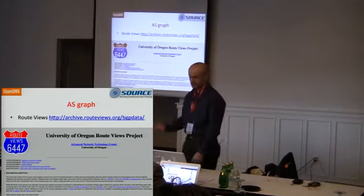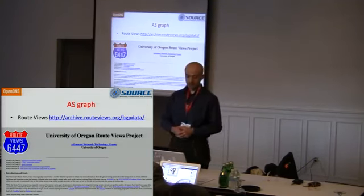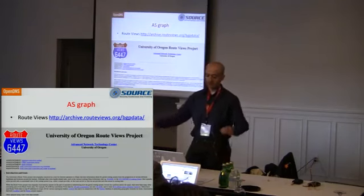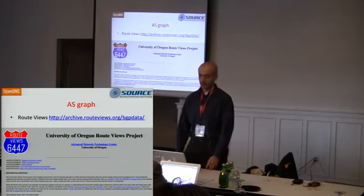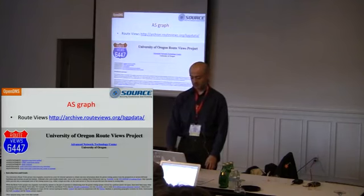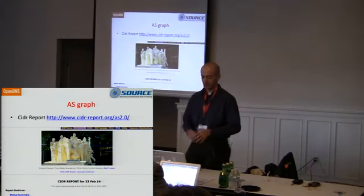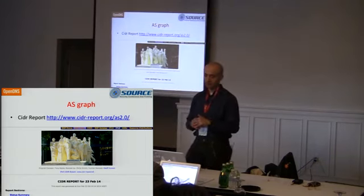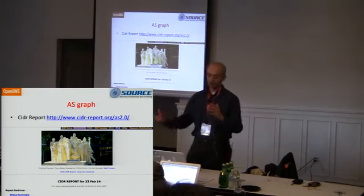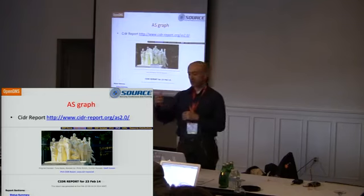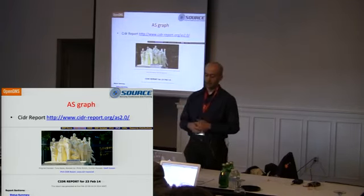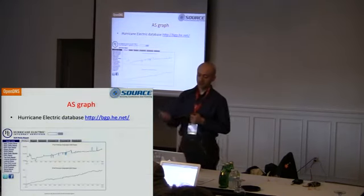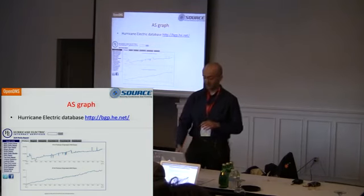It's a big graph — not massive, but very interesting if you enrich it with attributes. Route Views has multiple vantage points on the IP space and can provide different views of the RIB, the routing information base of routers on the internet backbone. CIDA Report is useful because entering an ASN gives you all the upstream and downstream peers, helping you understand who an ASN relies on and who relies on it. Hurricane Electric also has a lot of statistics and very valuable information.